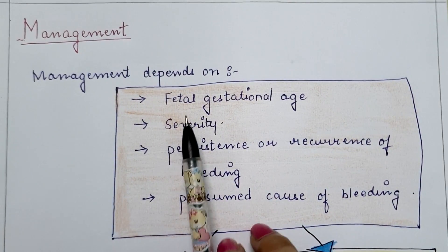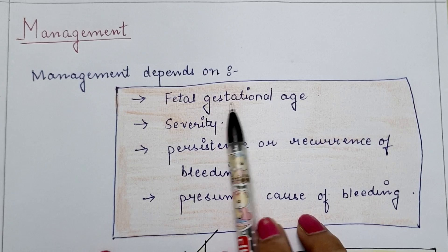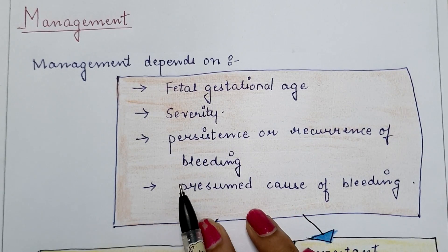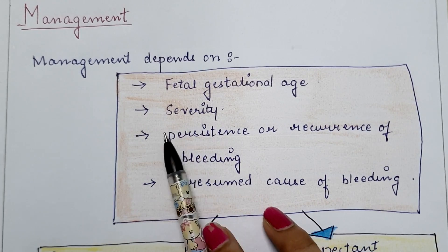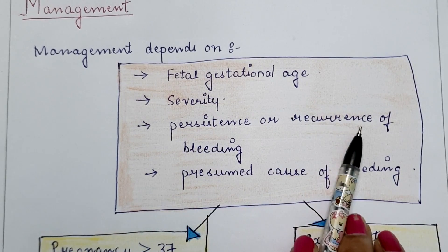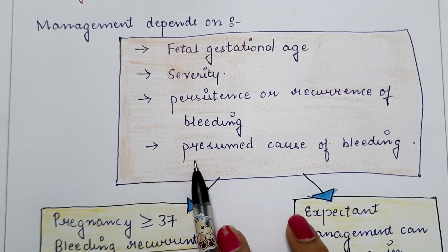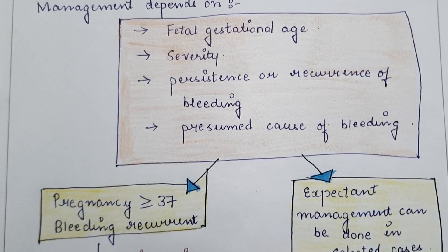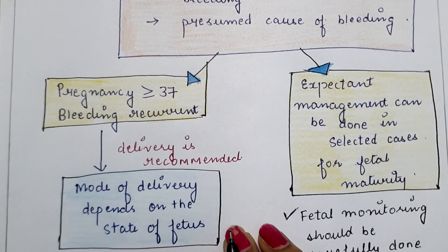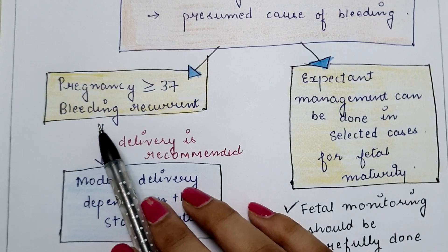At last, the management of vasa previa. Management depends on: fetal gestational age — whether the mother is pregnant for 37 completed weeks or not; severity of the condition — how much blood loss has occurred; whether the membranes are ruptured or not; whether the blood vessels are ruptured or compressed; persistence — continuous or recurrent bleeding; and the presumed cause of bleeding — whether membranes are ruptured or compressed. If pregnancy is 37 weeks or more, and bleeding is recurring, immediate delivery is recommended.